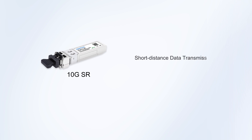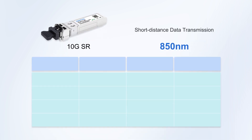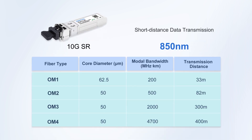Let's start with 10G-SR. The 10G-SR optical module is designed for short-distance data transmission. It uses an 850nm wavelength and runs over multimode fiber. Its actual transmission distance really depends on the type of fiber used. The distance varies across OM1, OM2, OM3, and OM4 fibers.